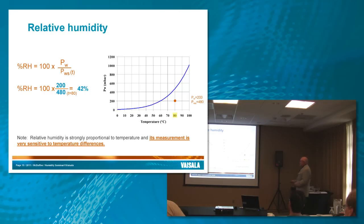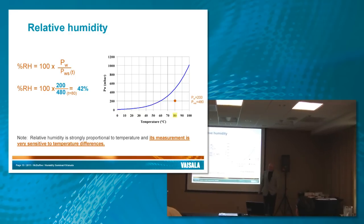So if you have a point here on the chart, this point here, you've got a PW measured at 200, and a PWS at 480. So we'd go up here and across. So your relative humidity is 42%.